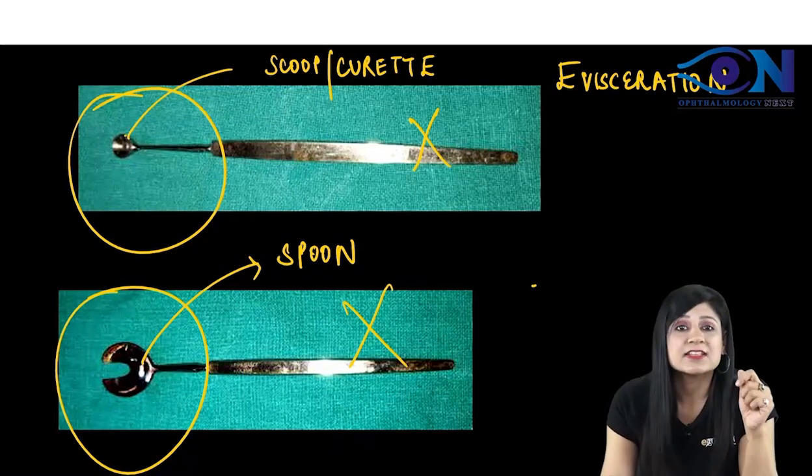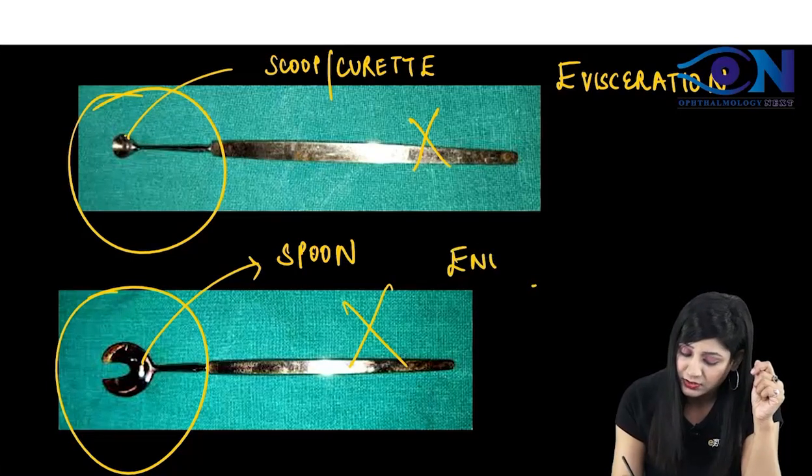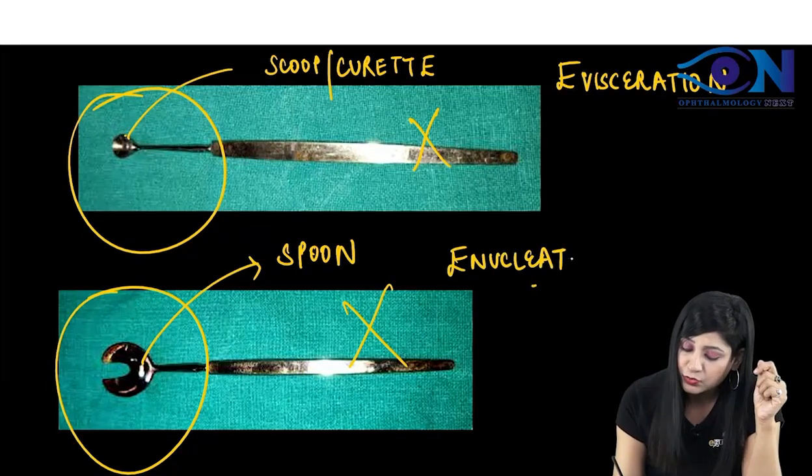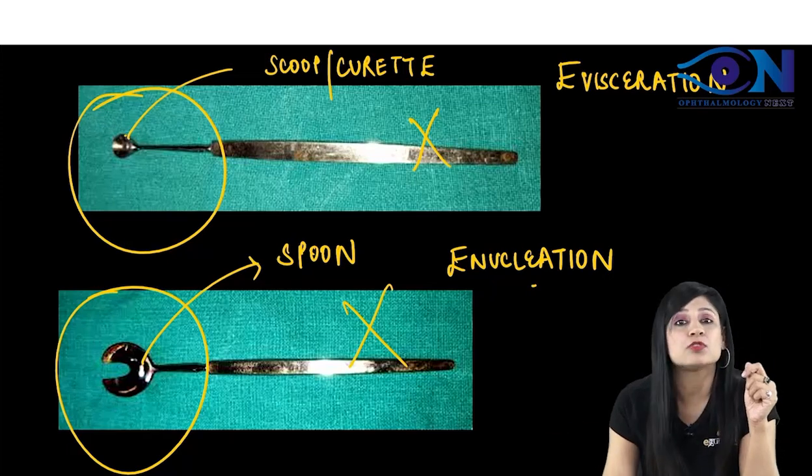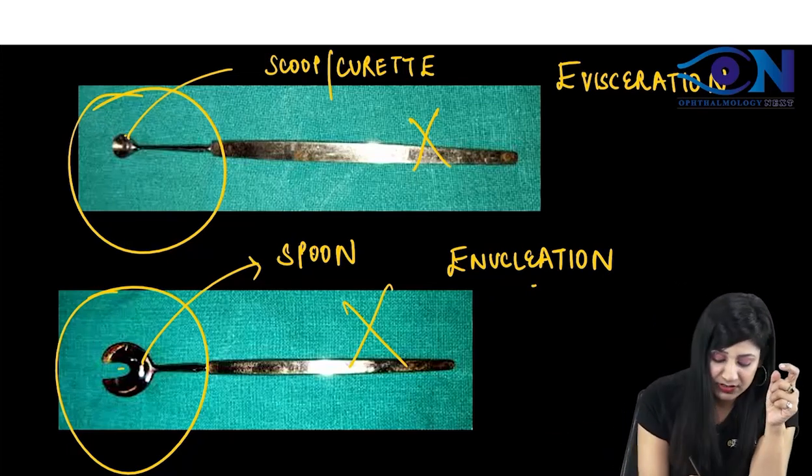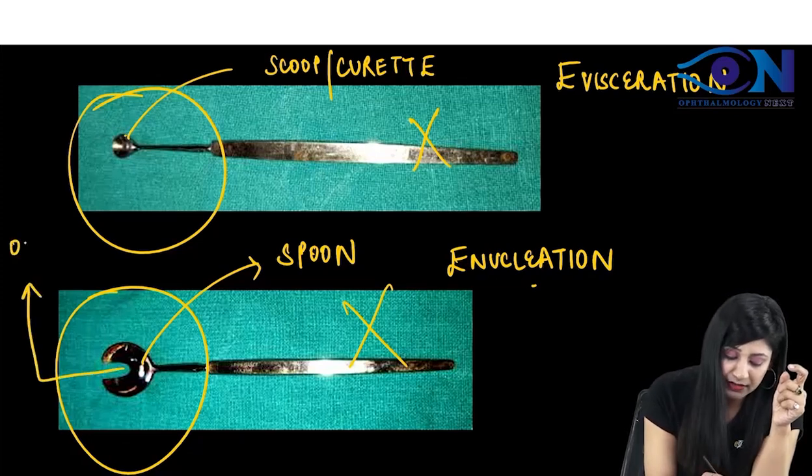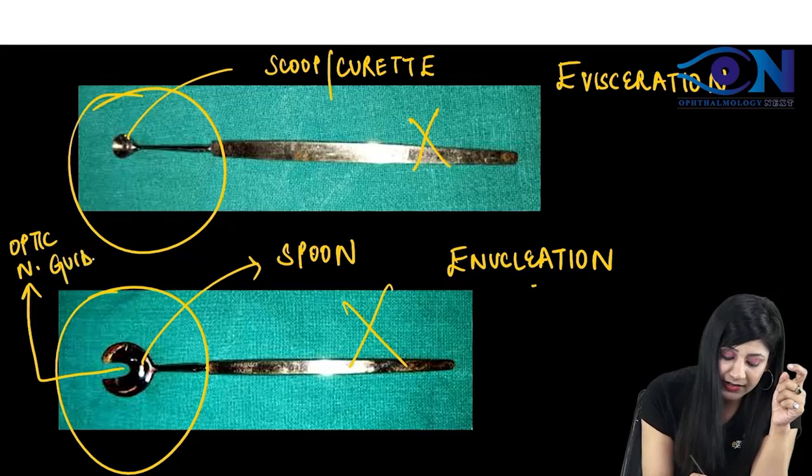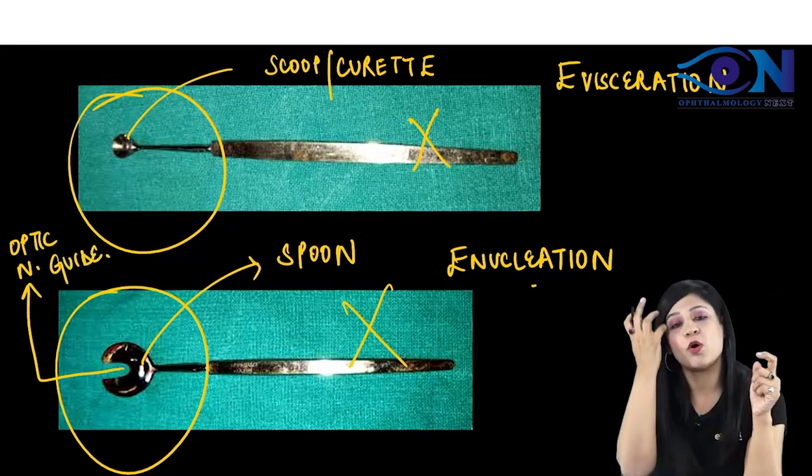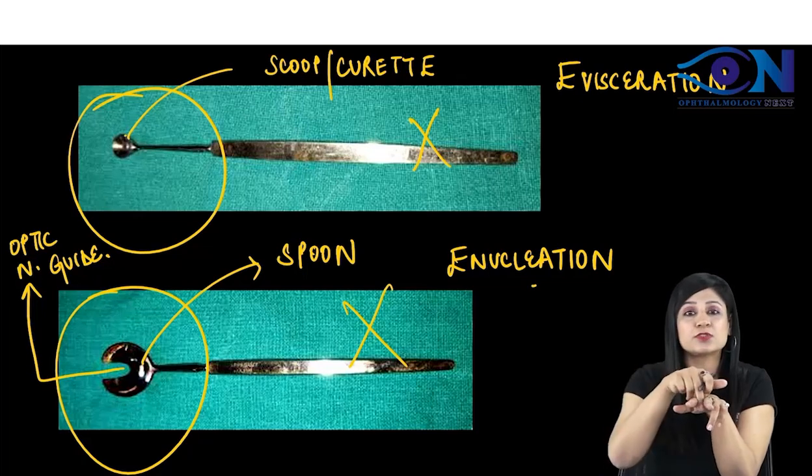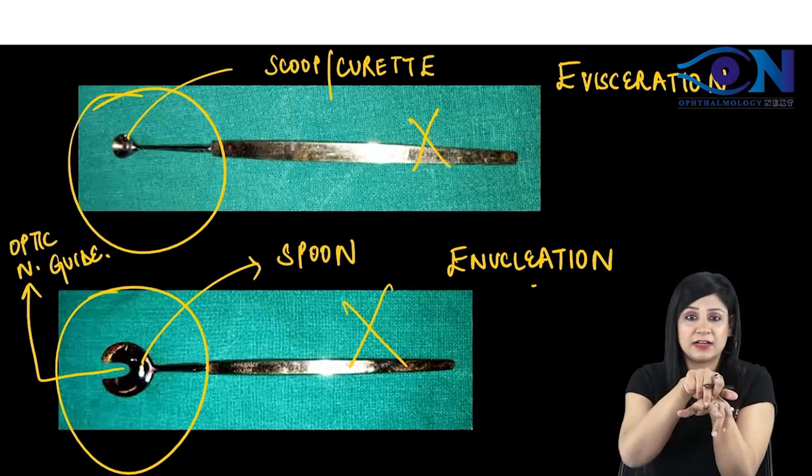But in cases of enucleation, where we have to take out whole of the eyeball along with the part of the optic nerve, this is called the optic nerve guide. This is for removing the eyeball along with the hooking. This area is used for hooking of the optic nerve.